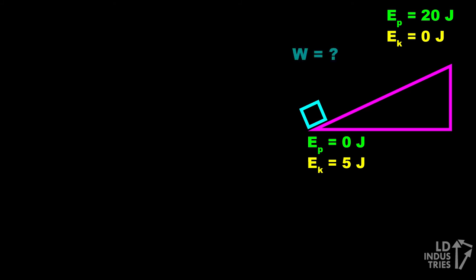One last example. Let's say the box slides down the hill again, but this time there's friction. The box starts off at rest with 20 joules of gravitational potential energy, and has 5 joules of kinetic energy at the bottom of the hill. How much work did friction do on the box?